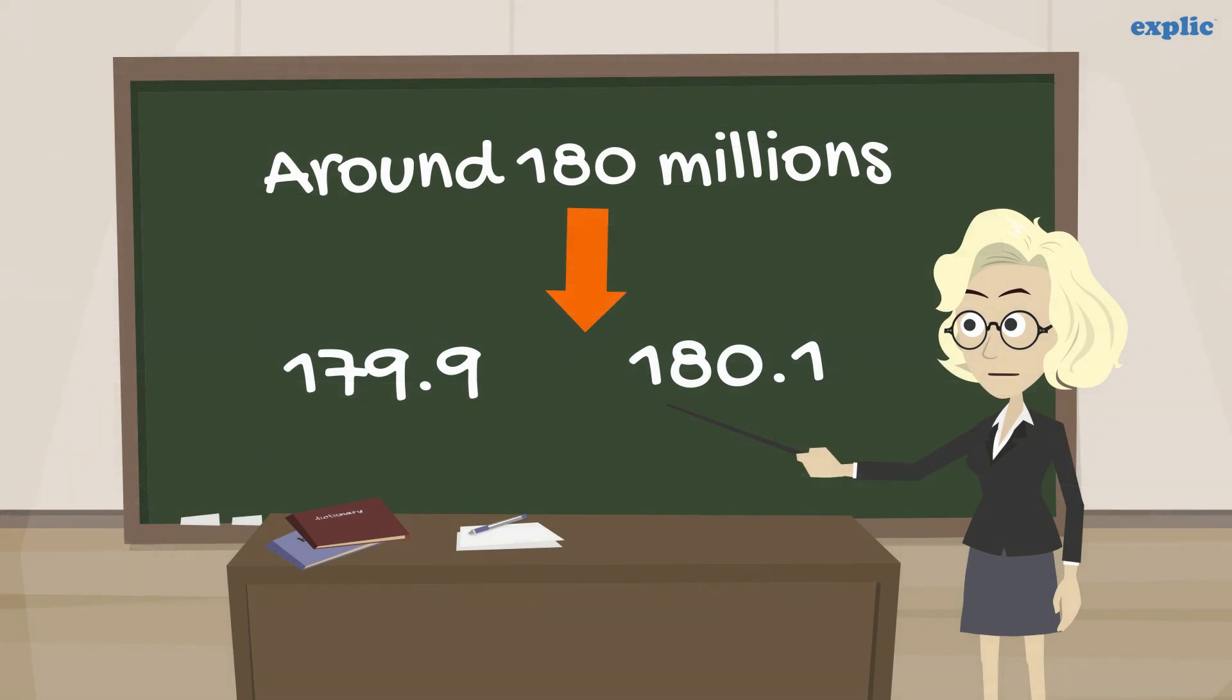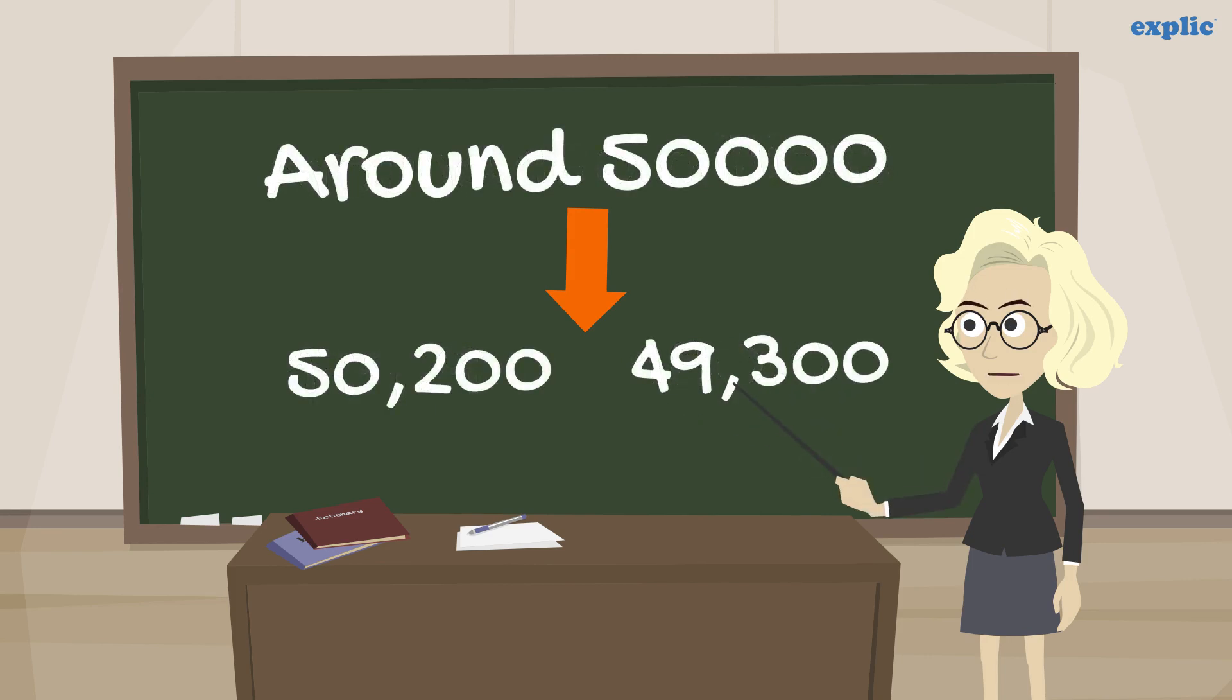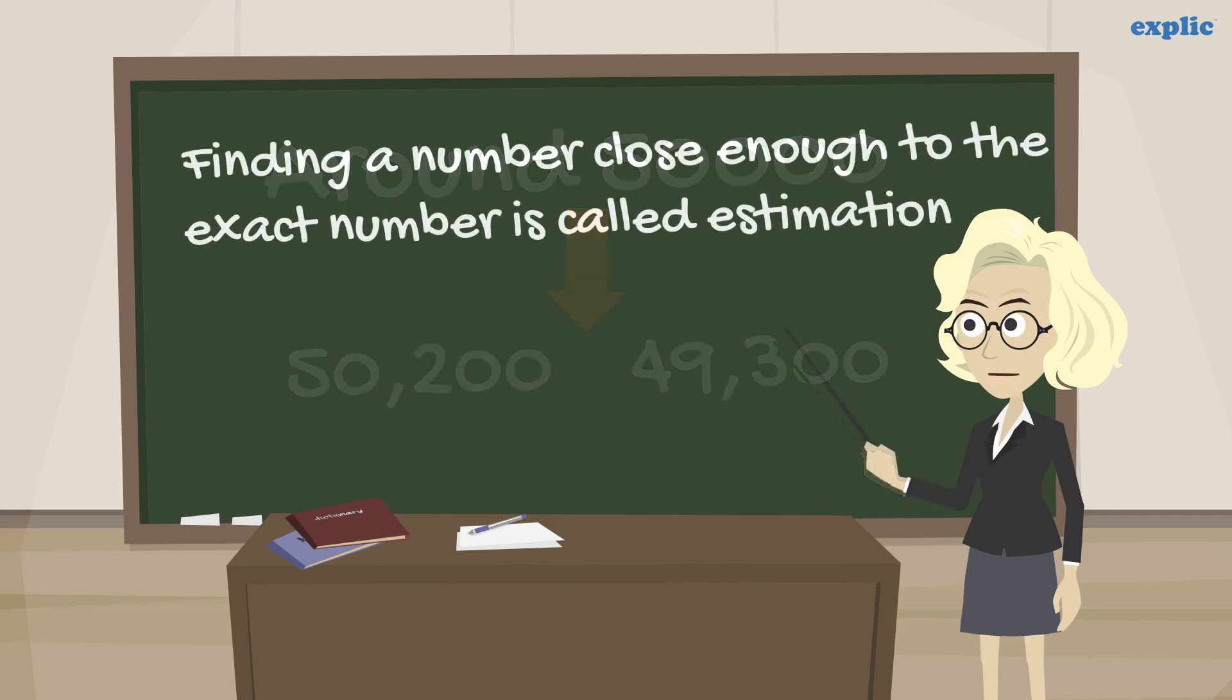In the first example, the number shown is not exact but close to the real number. For example, 180 million could be 179.9 or 180.1. In the second example, the number of people in the stadium could be any number close to 50,000, such as 50,200 or 49,300. Finding a number close enough to the exact number is called estimation.